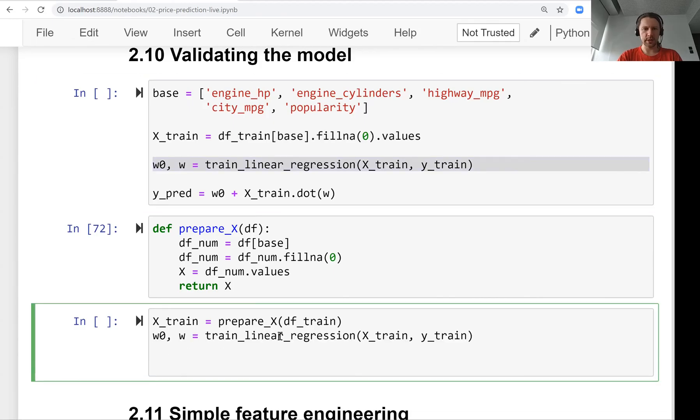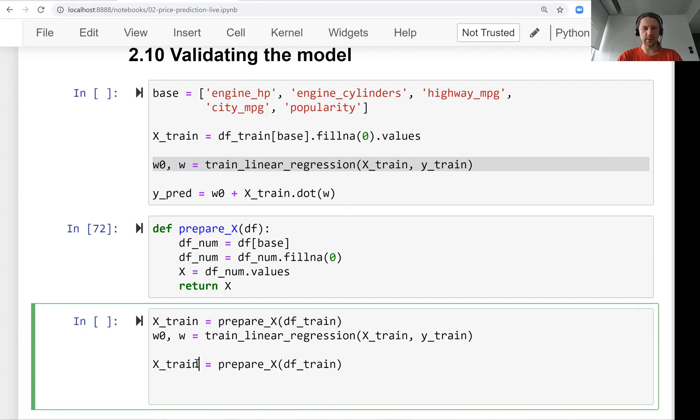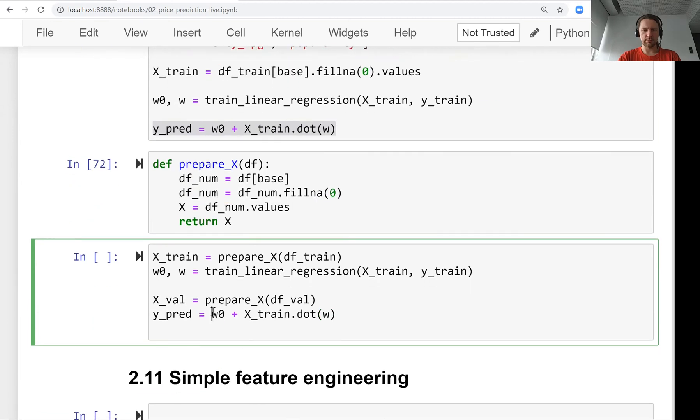We prepare the matrix, train the model, then again prepare the matrix, but this time we prepare our validation dataset. We use the same function except that instead of using the training dataset we use the validation dataset.